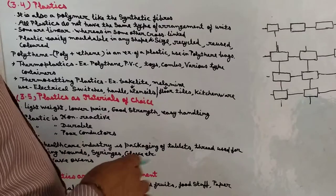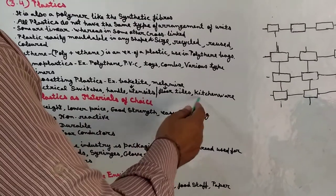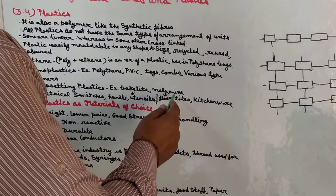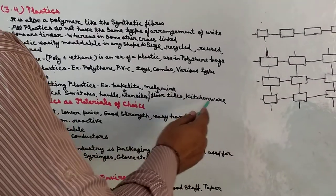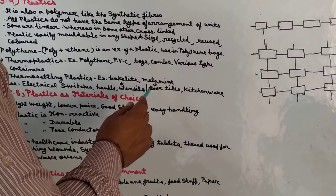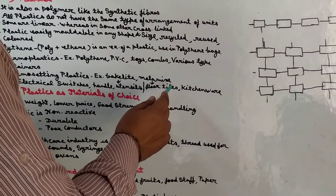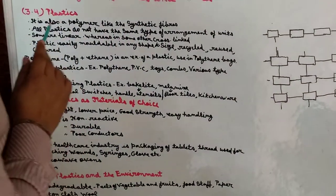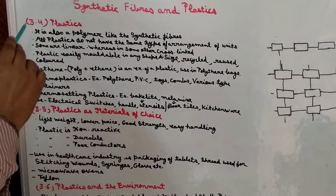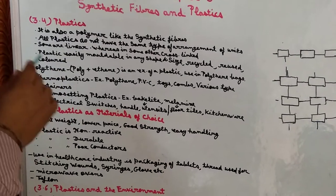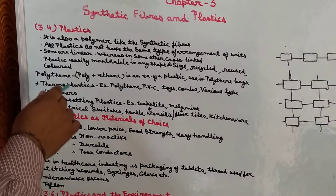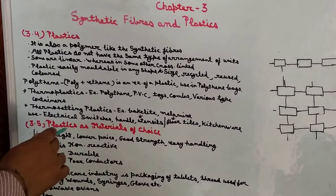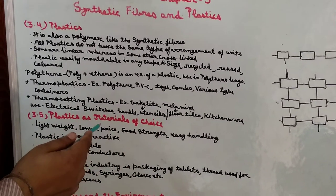Next है melamine. Kitchen में जो plates या trays होती हैं वो melamine की बनी होती हैं, इसलिए kitchen wear के रूप में melamine का use होता है, floor tiles के रूप में भी इनका use होता है. तो यह रहा कि plastic क्या है, इनका किस रूप में use होता है, क्या properties हैं, कितने type हैं — यह हमने इस video में समझाया. Next topic I will discuss again. Thank you.